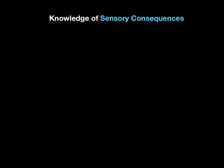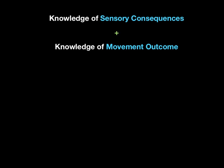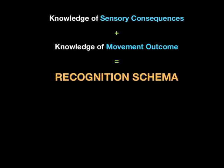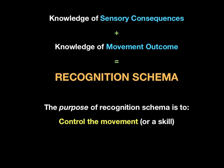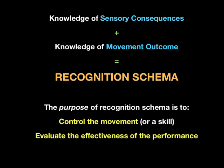The knowledge of sensory consequences — how should that skill feel — plus the knowledge of movement outcome — what will happen if I perform this skill — equals recognition schema. The purpose of recognition schema is to control the movement or skill being performed, and also to evaluate the effectiveness of that performance. So recognition schema will control the individual doing the dummy move in rugby league, but at the same time evaluate its effectiveness — did that dummy come off? Was it worthwhile doing that dummy?